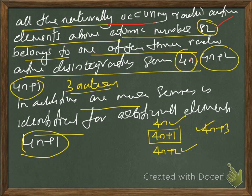These are the three natural series. We have one more series for artificial elements, that is 4n+1. So we have 4n, 4n+1, 4n+2, and 4n+3 totally. Among these, 4n, 4n+2, and 4n+3 are natural series, and 4n+1 is the artificial series.